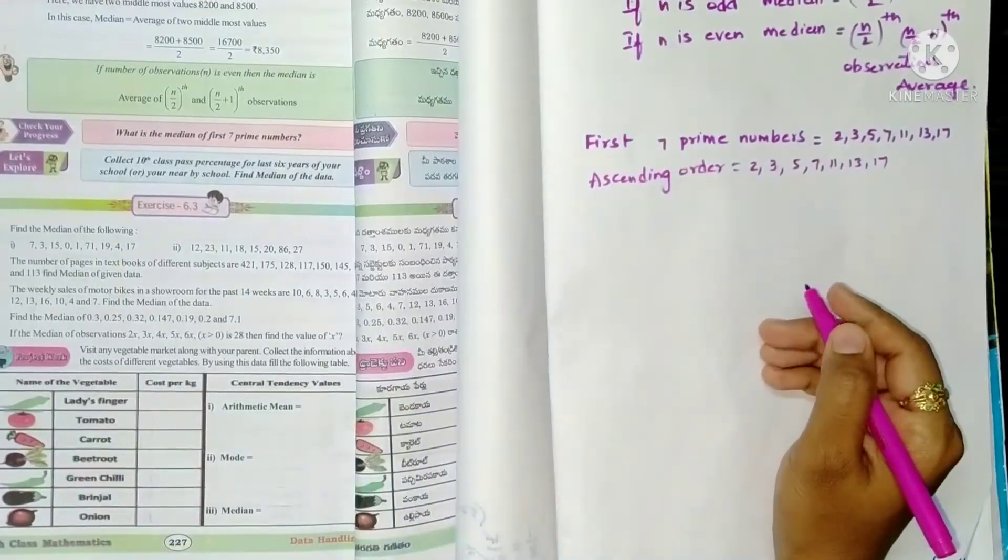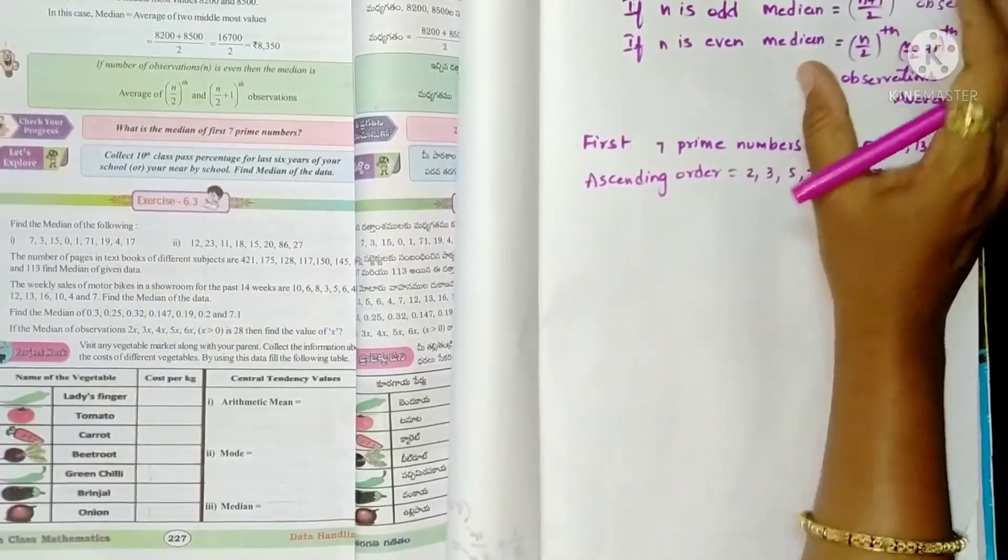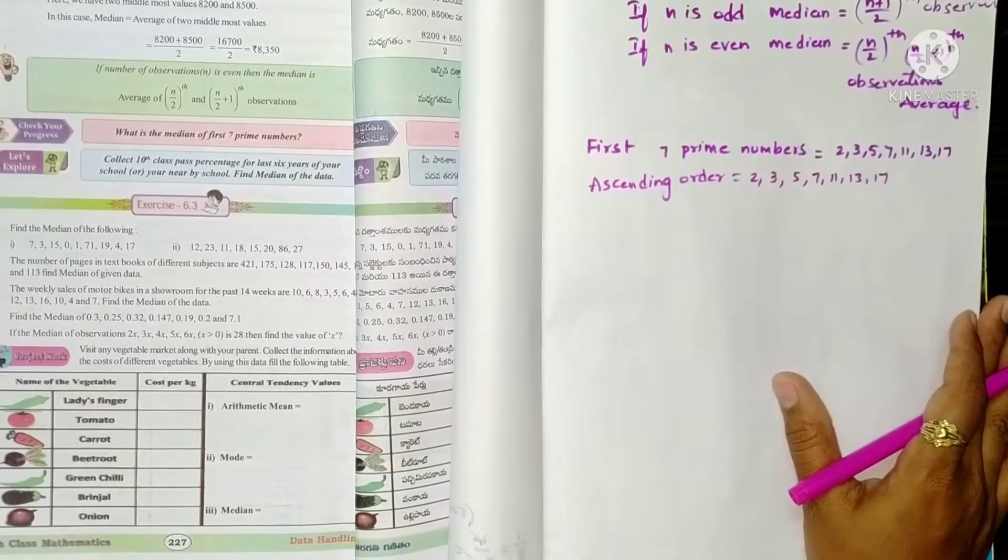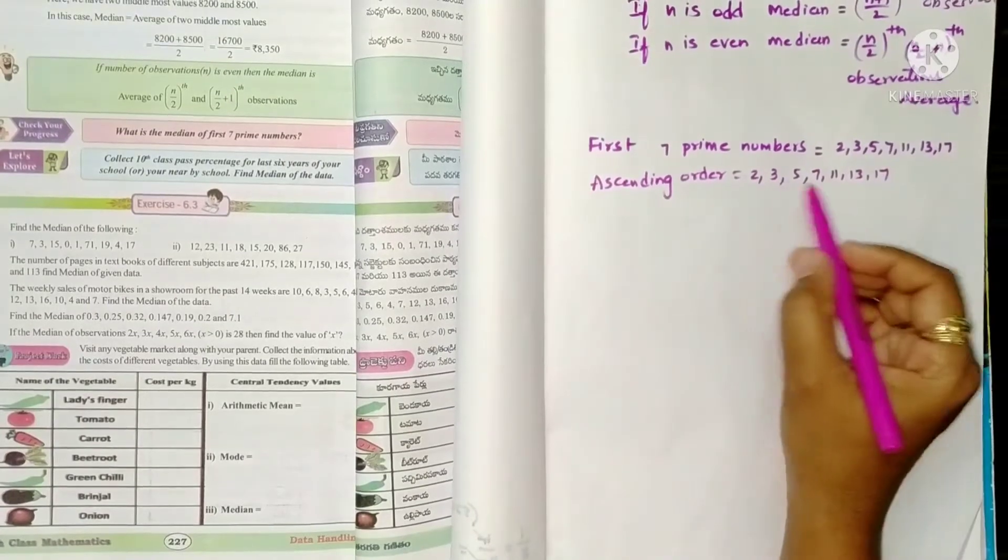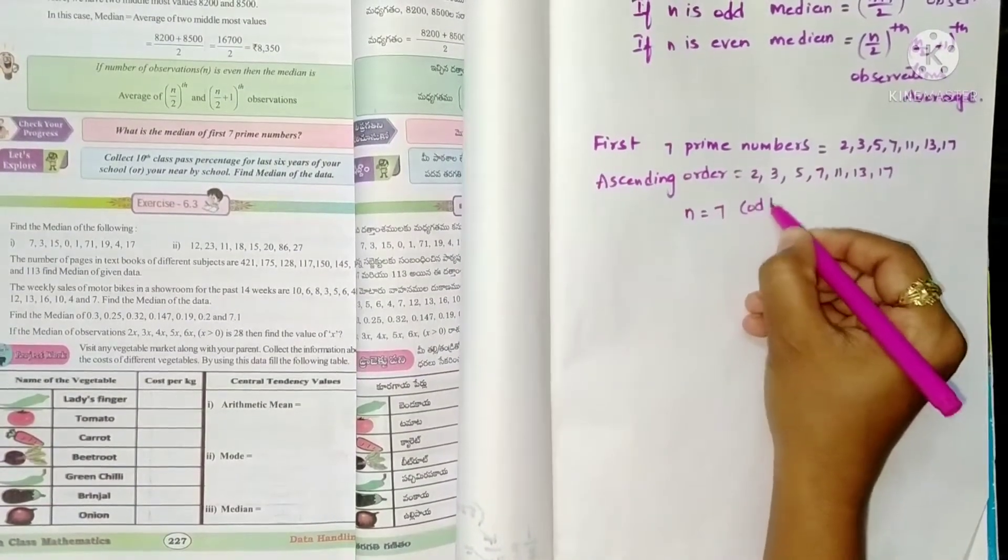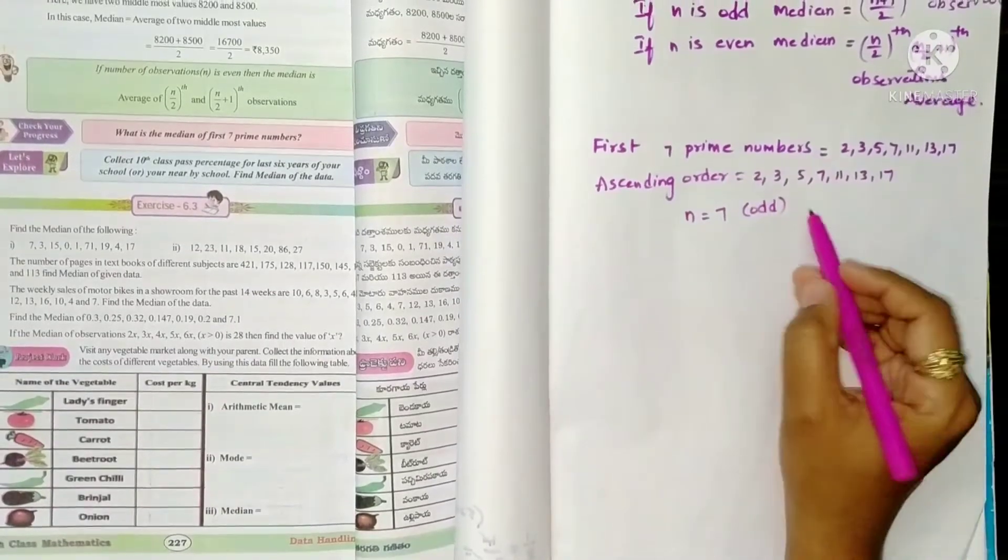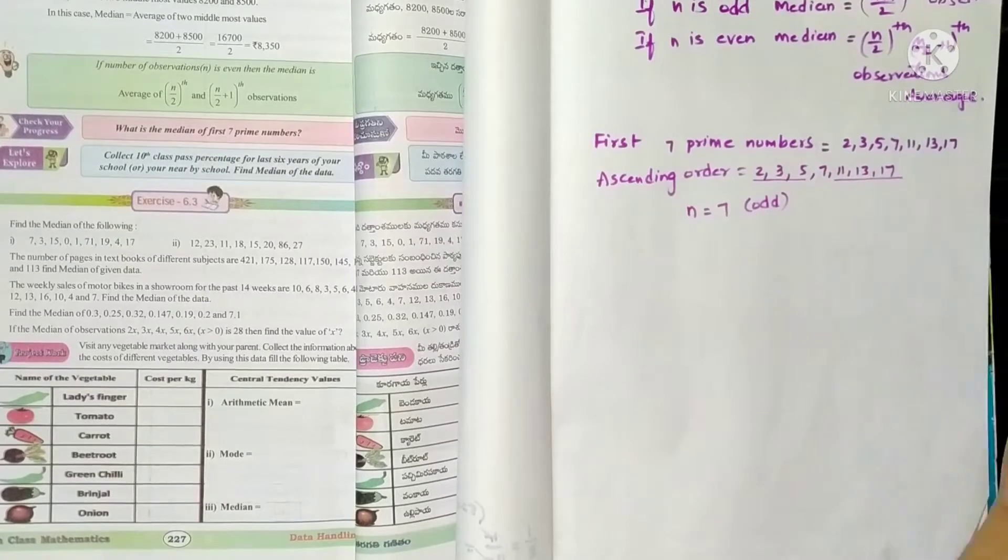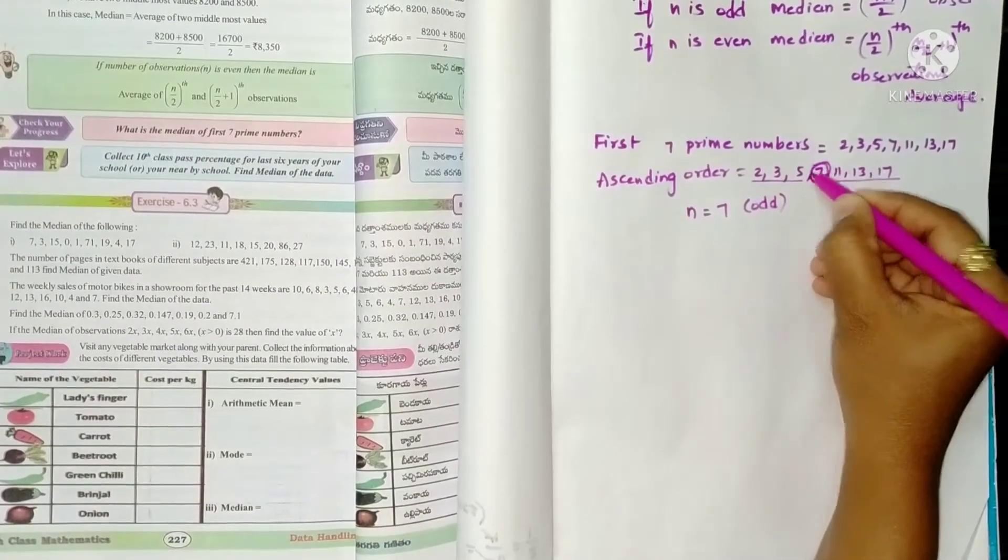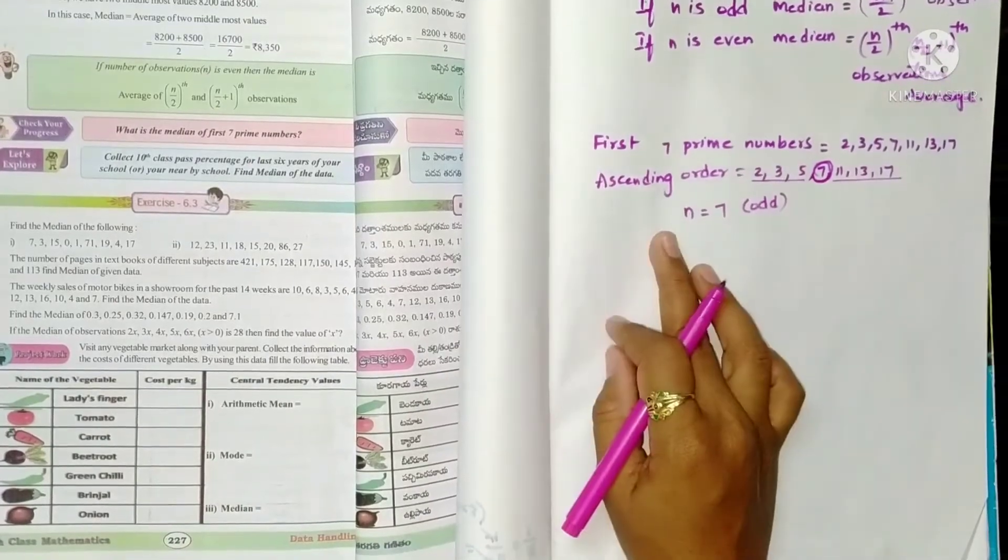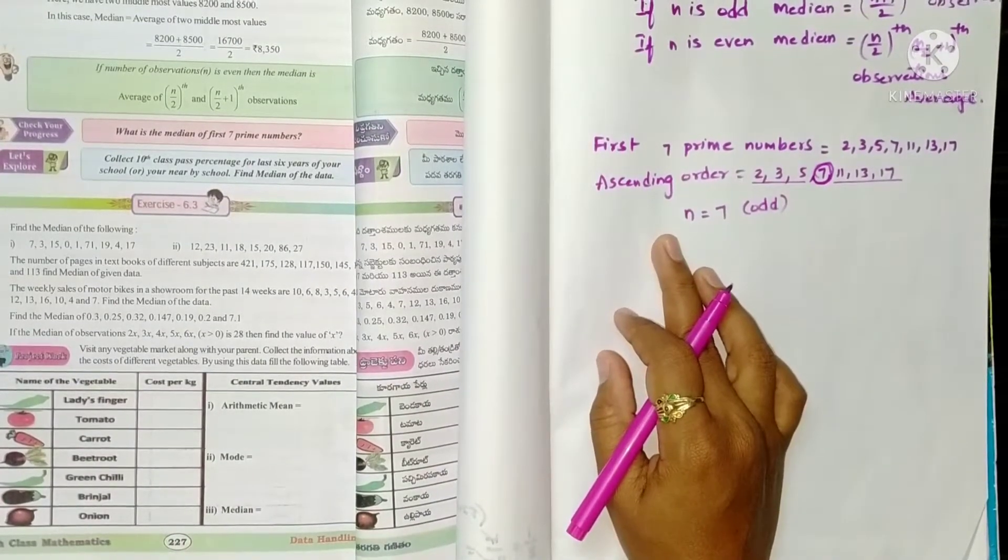Now we have to find the median. Median is the middlemost value after arranging the data in an order. We arrange in ascending order, small to big: 2, 3, 5, 7, 11, 13, 17. This is already in order. See here, there are 3 on this side and 3 on this side, the middle one is called median.